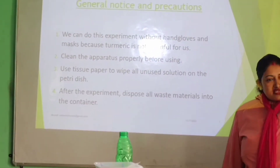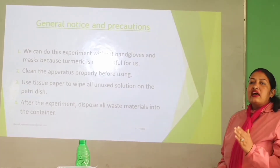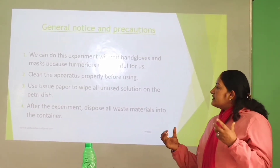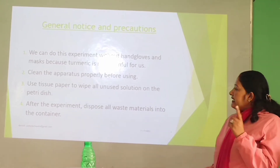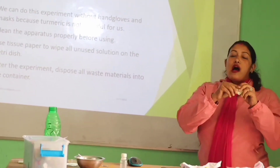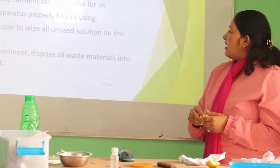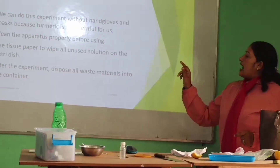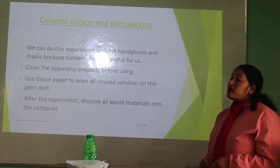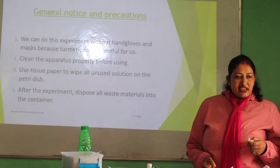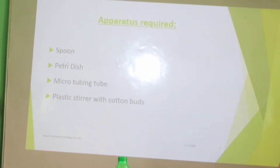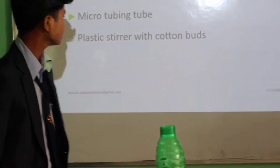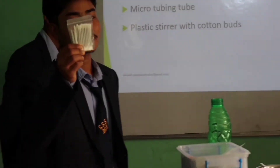General notices and precautions: while doing the experiment, first of all clean the apparatus properly before using it. Then use tissue paper to wipe all unused materials and solutions on the petri dish. After the experiment, dispose all waste materials in the container. Items needed: a tap part of a spoon, petri dish, and plastic stirrer with cotton.